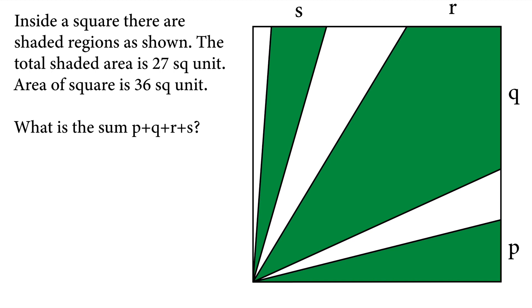Hi there. In this video, we will solve this geometry question that involves area of triangles and square. Inside a square, there are shaded regions as shown. The total shaded area is 27 square unit. Area of square is 36 square unit. What is this sum? P plus Q plus R plus S.